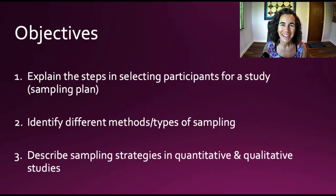Our objectives today are to explain the steps in selecting participants for a study, that's also called a sampling plan. The second one is to identify different methods and types of sampling. And finally, we want to describe sampling strategies in quantitative and qualitative studies. So before we dive in, sampling is super important because it helps determine the rigor and the credibility or the powerfulness of a study. So that's the overarching reason, and we'll be looking at other reasons throughout this lecture.